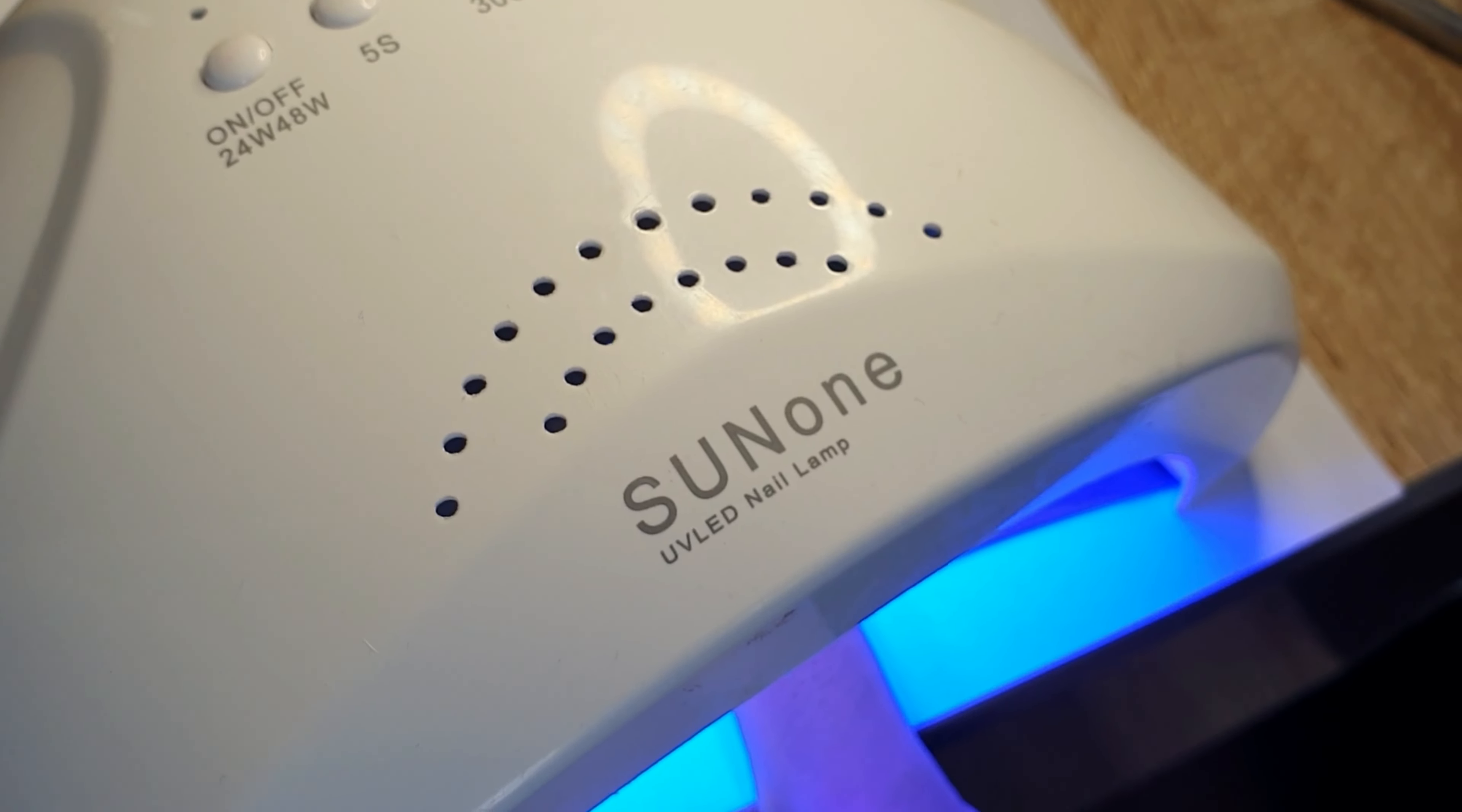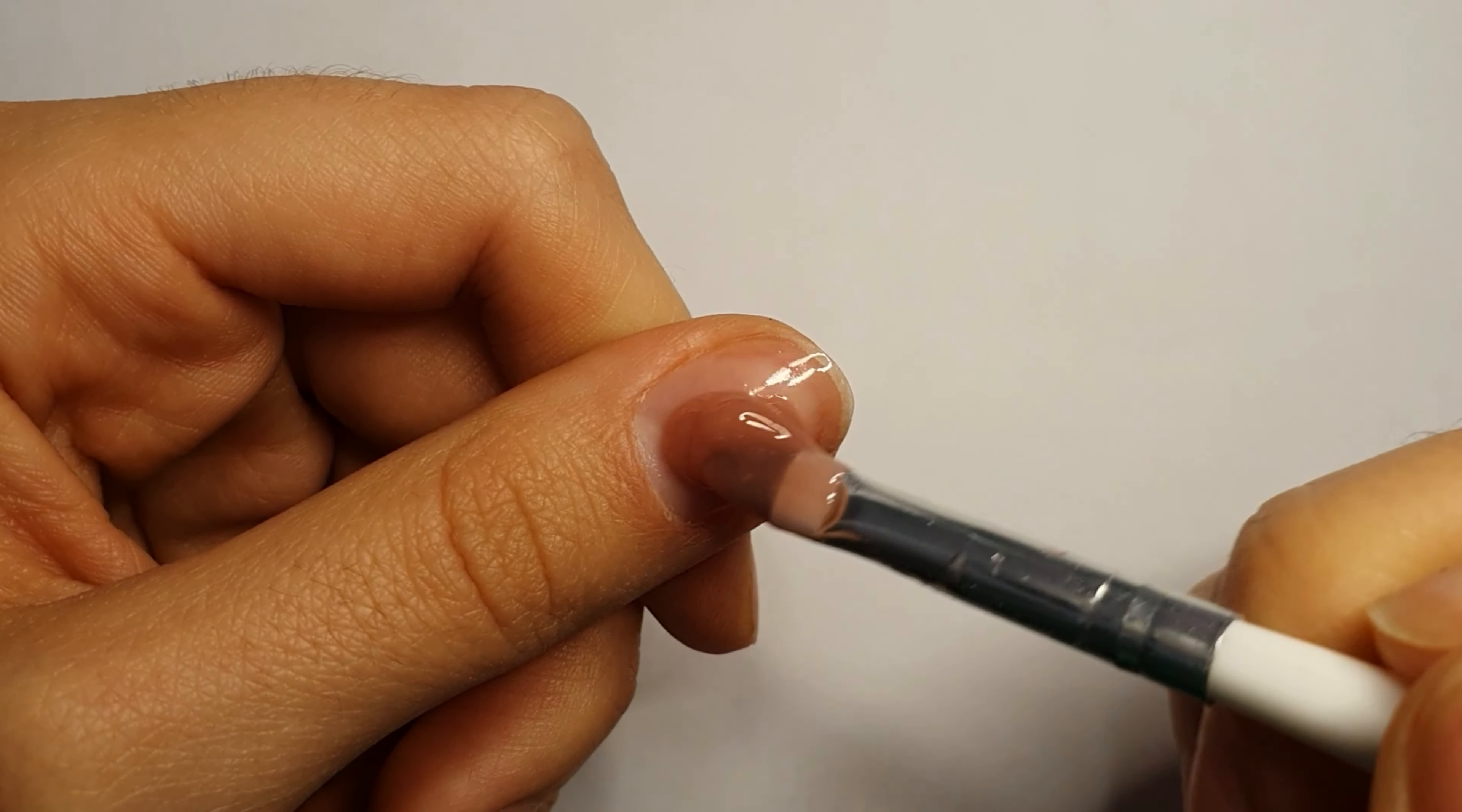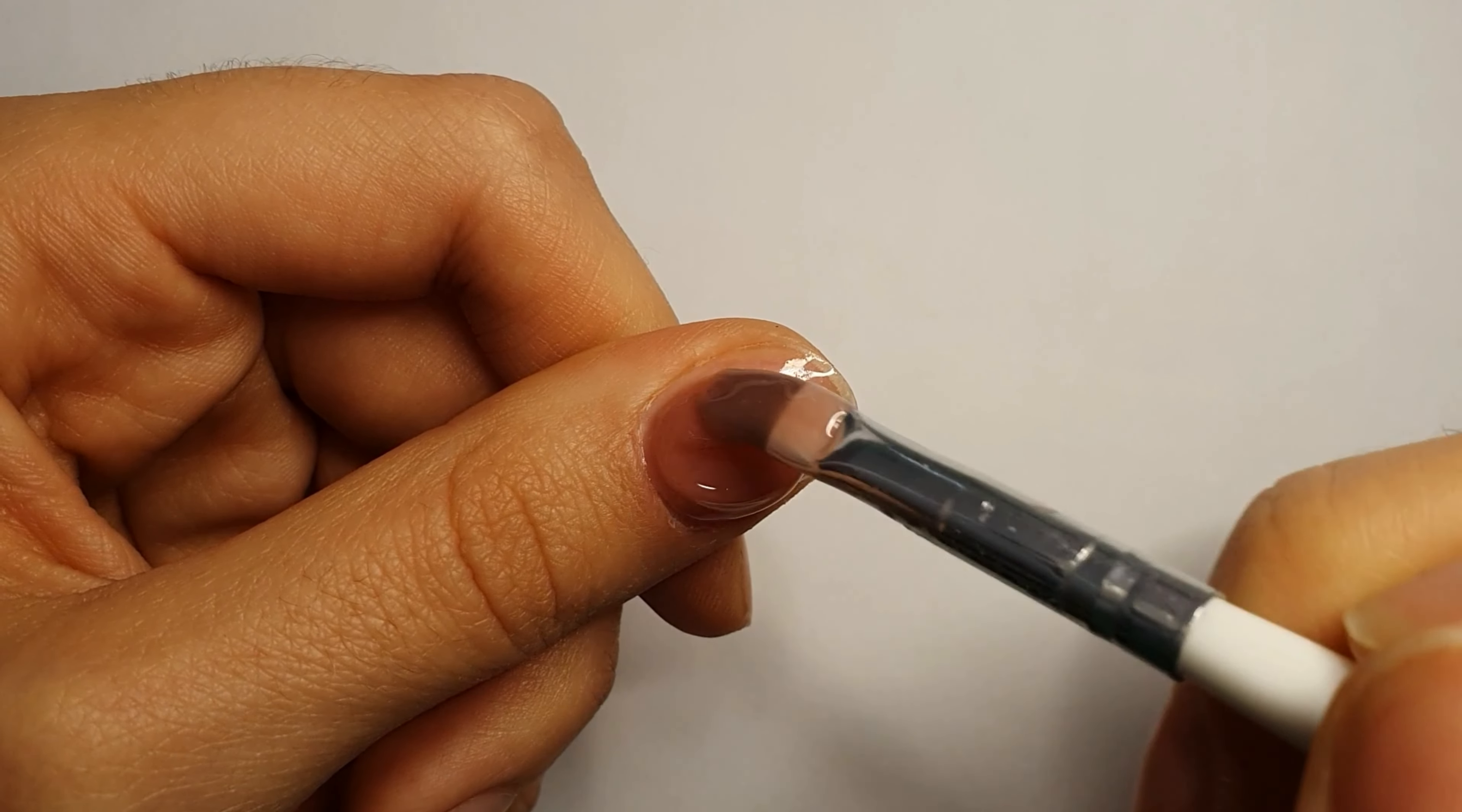After curing base coat, I'm going to apply builder gel. I choose this shade because I'm going for a natural look. I like to make small circles while I apply the builder gel because I feel like it's easier to make an even surface.